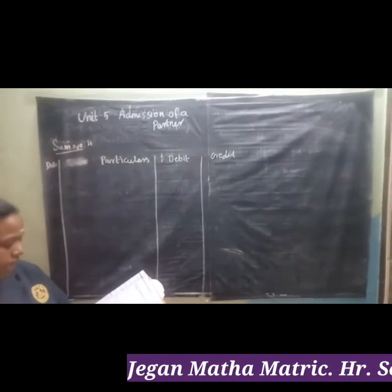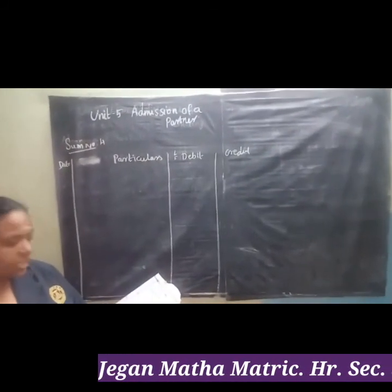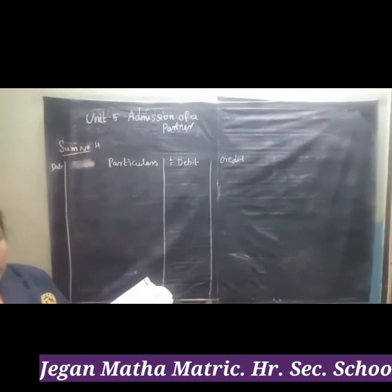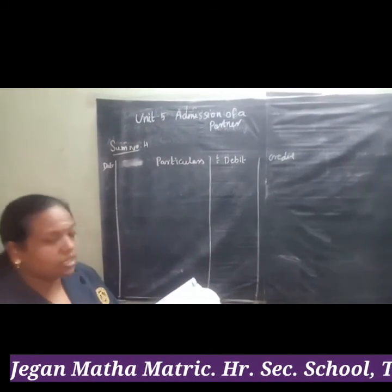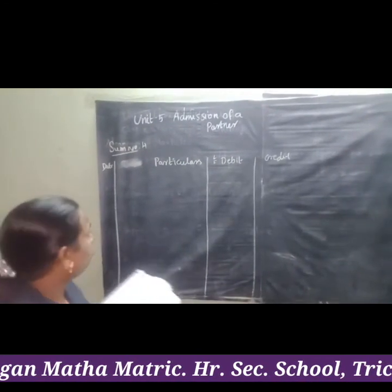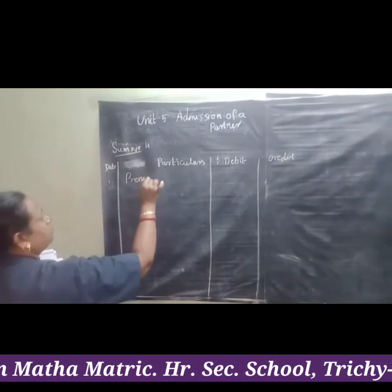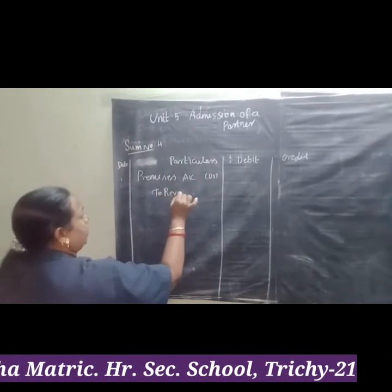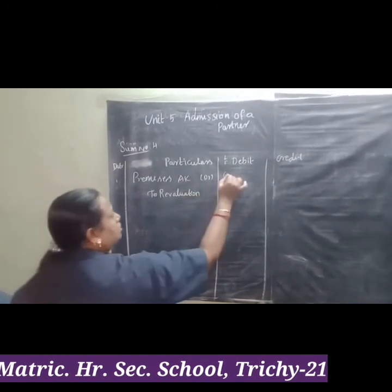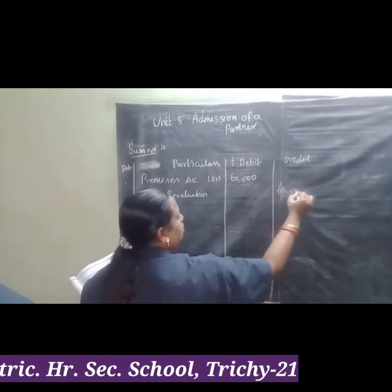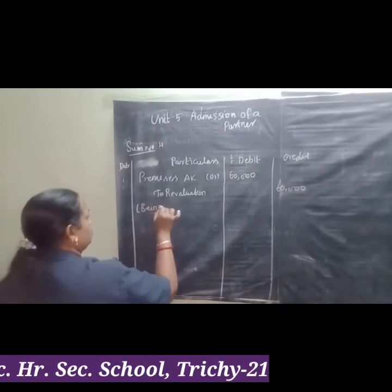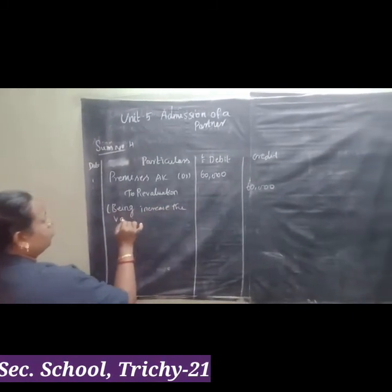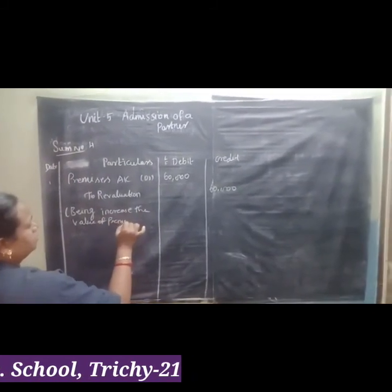First adjustment: increase the value of premises by 60,000. Premises means asset. So this is an increase in asset value. The entry will be: Premises Account Dr to Revaluation Account. The amount is 60,000. Being increase in the value of premises recorded.